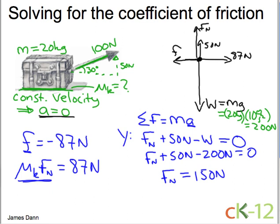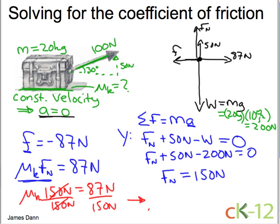Let's plug that in here. So now I have, and I'll do it in red here, mu k times 150 newtons, is equal to 87 newtons, and dividing both sides by 150 newtons, I get mu k is equal to 87 newtons divided by 150 newtons, which, if you plug this into your calculator, is equal to 0.58, or 0.6 to 1 sig fig.